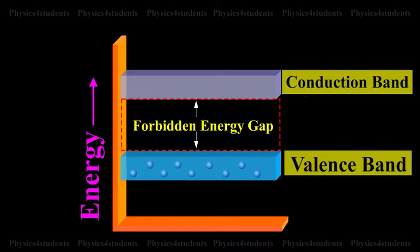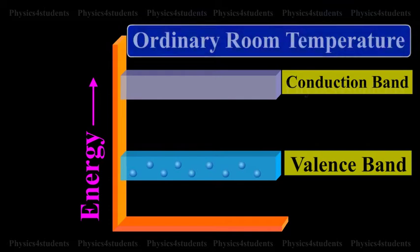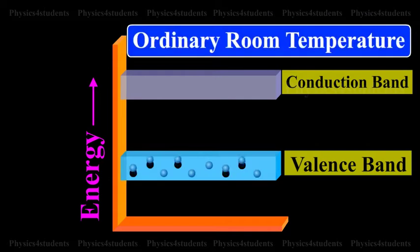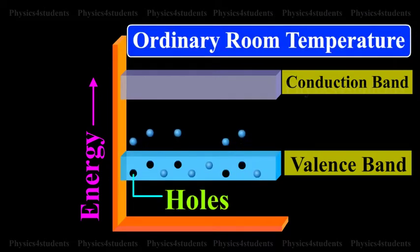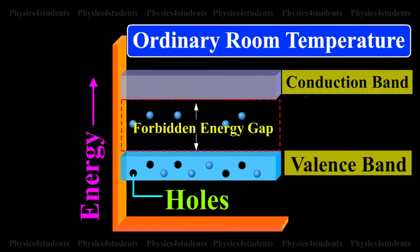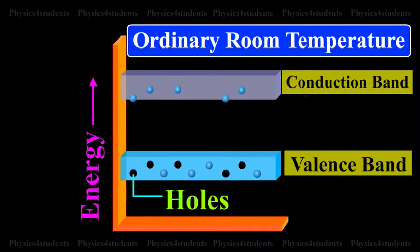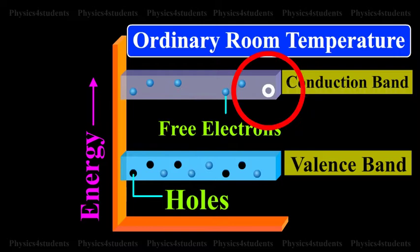The forbidden energy gap is so small that, even at ordinary room temperature, there are many electrons which possess sufficient energy to cross the forbidden energy gap and enter into the conduction band. The schematic band diagram of an intrinsic semiconductor at room temperature is represented as shown in the animation.